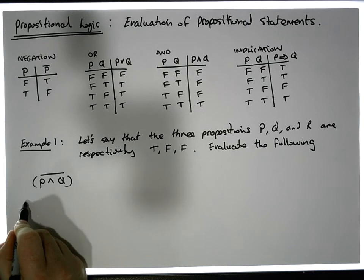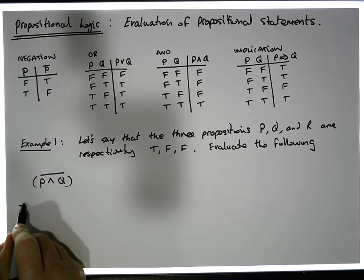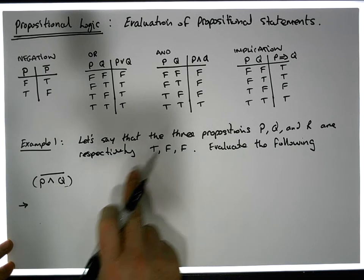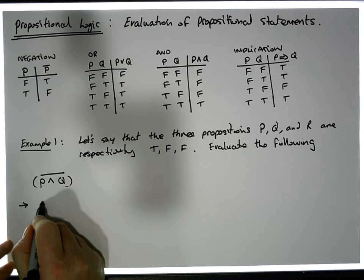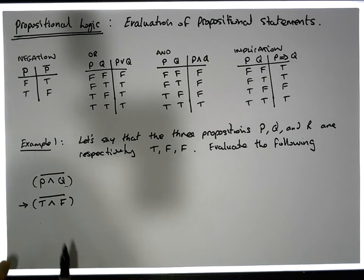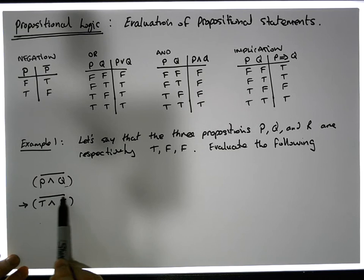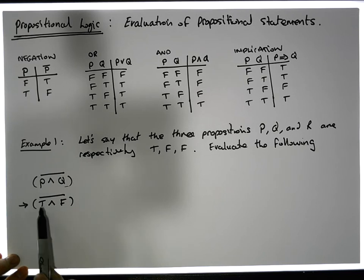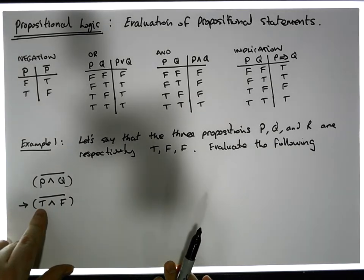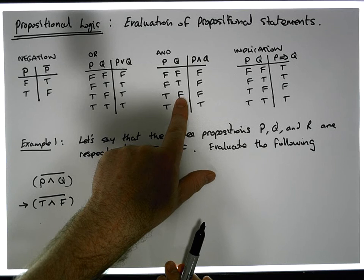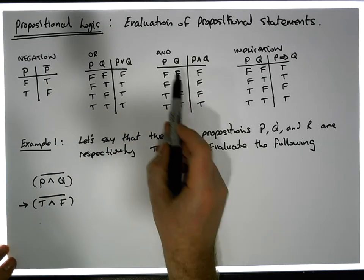So this becomes: true AND false, and then we need to negate that. Before we can do the negation, remember that negation only works on a single truth value. Here we have a compound situation — an AND — so we need to evaluate the AND first. What does AND evaluate to when the left operand is true and the right operand is false? Looking at the AND table, when left is true and right is false, AND evaluates to false — which makes sense, since AND is only ever true when both operands are true.